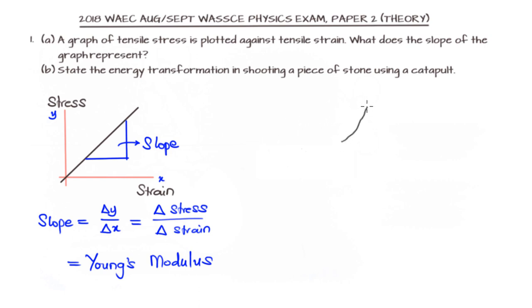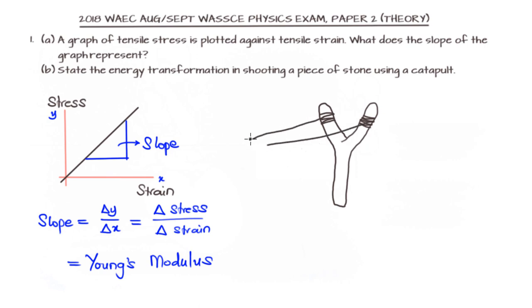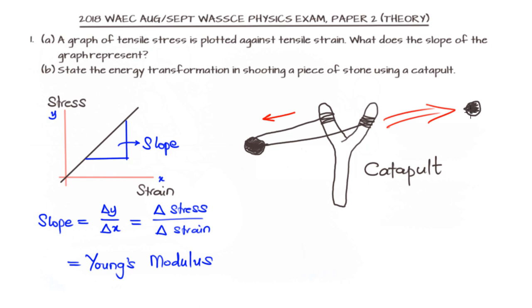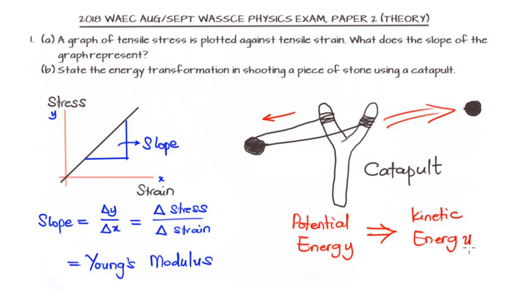In question B, we are asked to state the energy transformation in shooting a piece of stone using a catapult. Normally, we draw back the sling with a stone placed in it, and then we release it, causing the stone to fly forward. The energy transformation taking place is the potential energy stored in the string being released to give the kinetic energy of the stone — potential energy to kinetic energy.